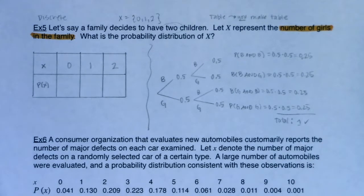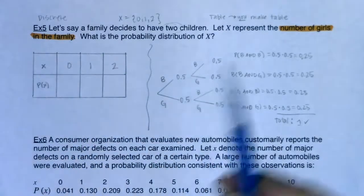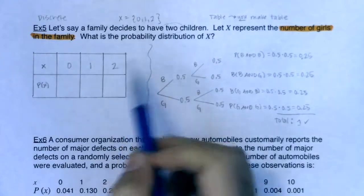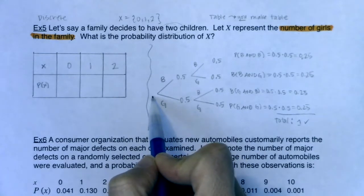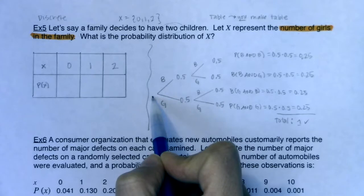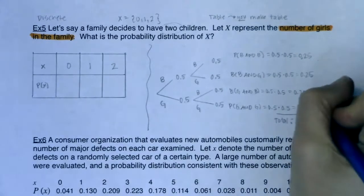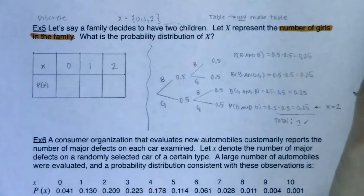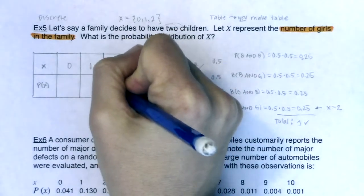That's a chapter 3 review, but we're extending it in chapter 4. When x equals 2 — meaning 2 girls — what branches are involved? I must have gone bottom-bottom. So that branch corresponds to x equaling 2, and no other branches give me 2 girls. The probability here is 0.25.